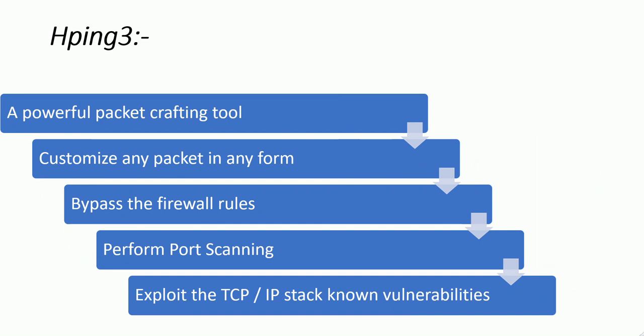hping3 is the most powerful packet crafting tool — we can customize any packet in any form. For example, in a TCP packet there are multiple fields like source port, destination port, and TTL value that we can modify for attacks. We can bypass firewall rules by performing modifications in the packets. We can also perform port scanning with hping3. This tool is already included in Kali Linux, and we can also exploit TCP stack vulnerabilities through hping3.